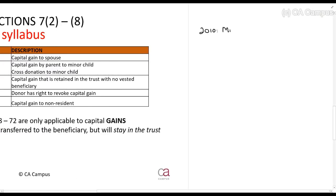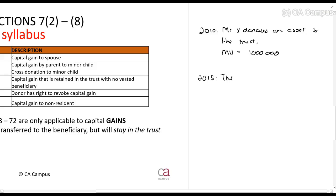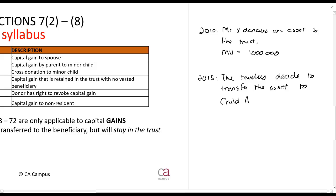Here's an example: in 2010, Mr. X donates an asset to the trust with a market value of R1 million. In 2015, the trustees decide to transfer the asset to child A, who is six years old, and the market value is now R1.5 million.